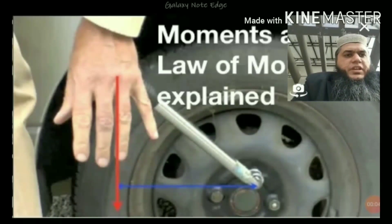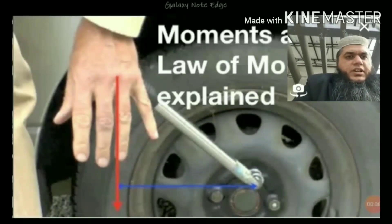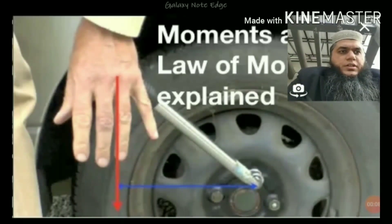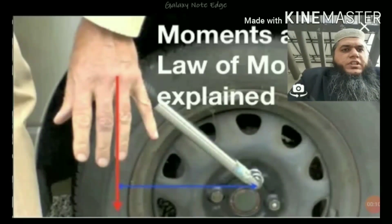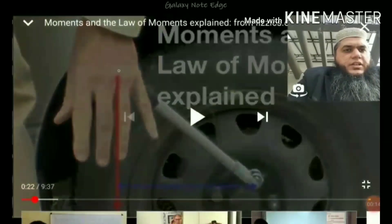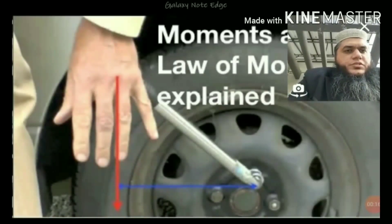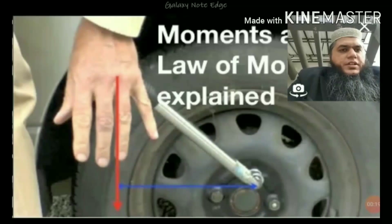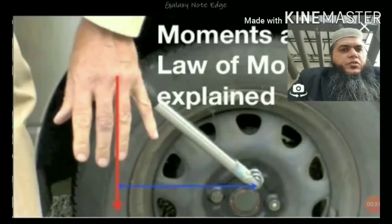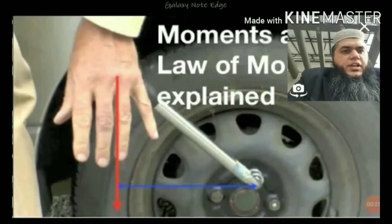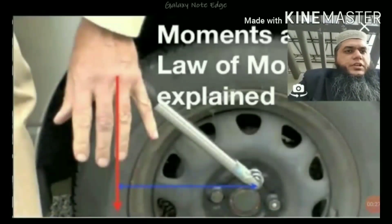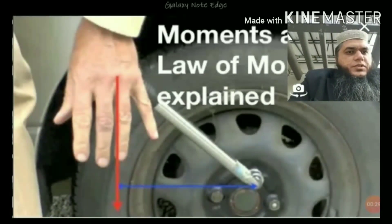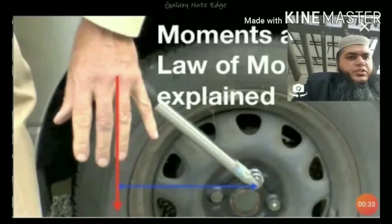Similarly, if you are opening the nuts of a car tire using a wrench: if you hold the wrench from the edge you will have to apply a smaller force because of a greater turning effect. But if you apply the force from the middle of the wrench it will be difficult to open the screw because the moment arm will be smaller and hence the turning effect of the force will be smaller.